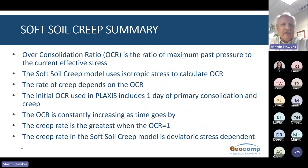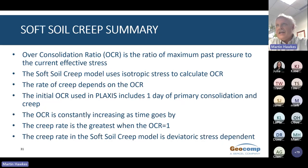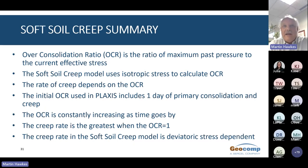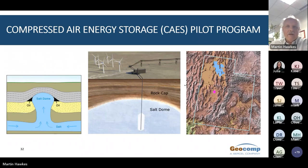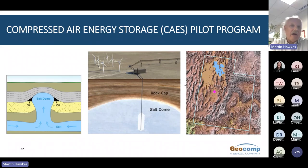Before switching to the salt cavern analysis, let me summarize what I've discussed so far. The over-consolidation ratio is the ratio of the maximum past pressure to the current effective stress. The soft soil creep model uses isotropic stress to calculate OCR, and the rate of creep depends on OCR. The initial OCR used in Plaxis includes one day of primary consolidation and creep. The OCR is constantly increasing as time goes by, and the creep rate is greatest when the OCR equals one. The creep rate in the soft soil creep model is deviator stress-dependent. Now I'll switch gears and talk about the compressed air energy storage project, which uses a totally different kind of creep model.